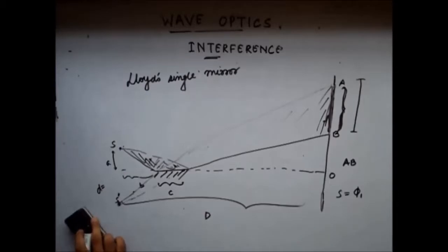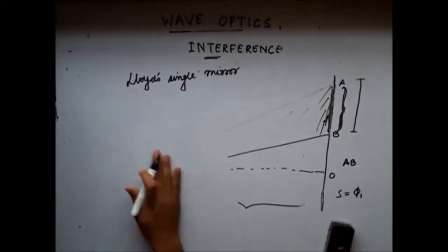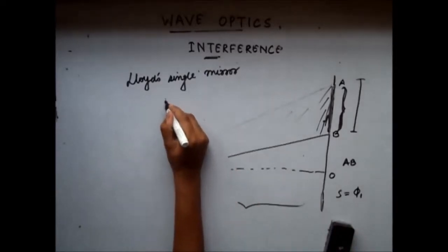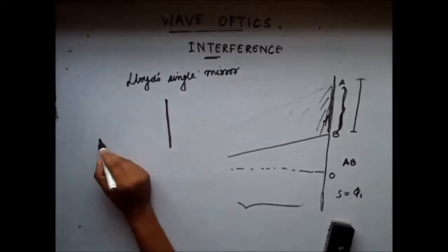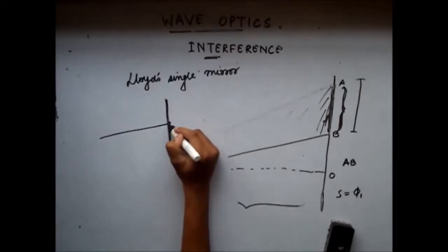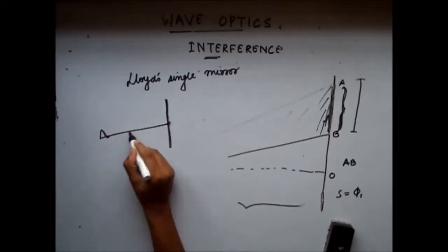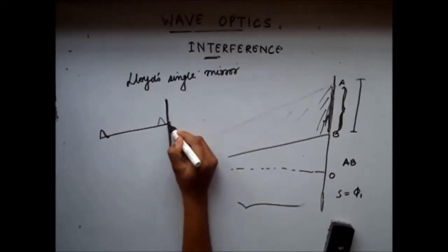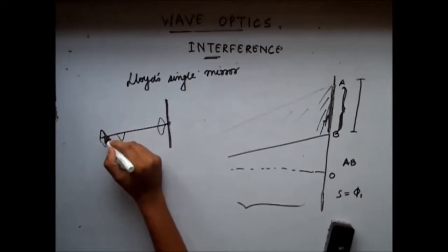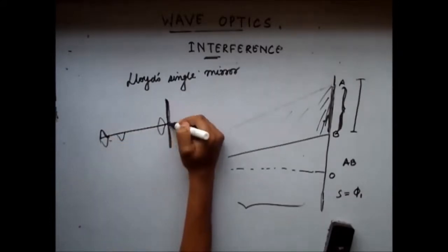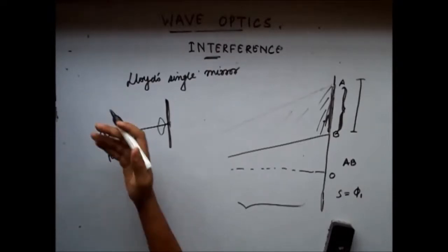Let us understand why that happens by drawing an analogy with waves. When we have a string tightly tied on a surface and we give a momentary push, the push travels and when it returns it comes back inverted. So after hitting the hard surface, it gets reflected and undergoes a phase change of π because it is completely inverted.